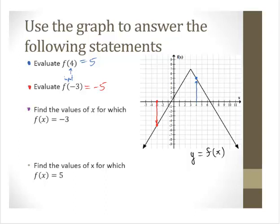Find the values of x for which f(x) = −3. Remember, that's the output — that's the y value. Where is the y value negative 3? Here's negative 3 on the y-axis and I'm going to draw a horizontal line — notice that it hits the curve at two places. So we have x = −2 and x = 8. There are two values of x for which f(x) = −3.